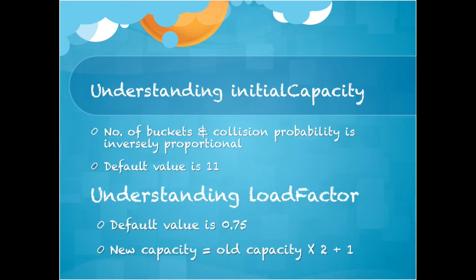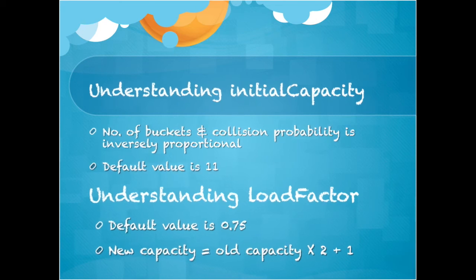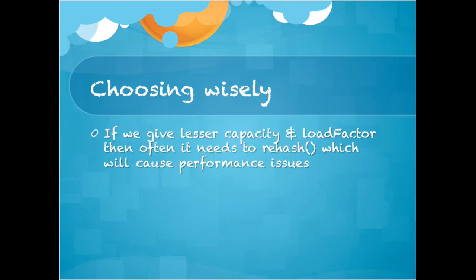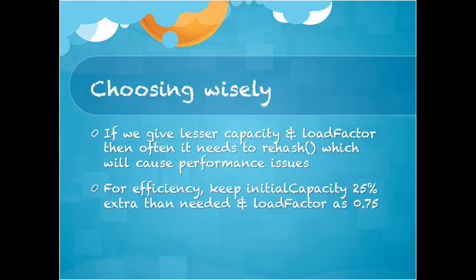Understanding the load factor: the default value of load factor is 0.75. New capacity is calculated as twice the old capacity plus 1. We have to choose the load factor and initial capacity very wisely. If we give lesser capacity than load factor, then often it needs to rehash, which will cause performance issues. For efficiency, keep initial capacity 25% extra than needed and load factor as 0.75.